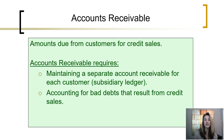You can think of the subsidiary ledger as kind of a three-ring notebook that sits on the side next to the main general ledger filing cabinet. Accounting for bad debts that result from credit sales is also another issue related to accounts receivable, and we will discuss that later.